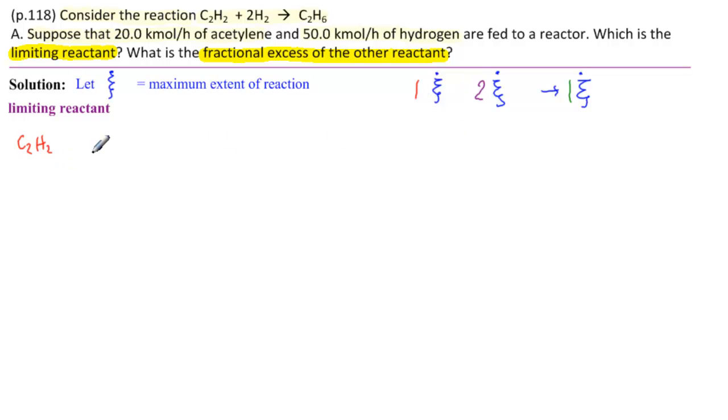Then one ξ̇ would be 20 kilomoles per hour, and then we would need two ξ̇ of hydrogen. So how much is two ξ̇? Two ξ̇ is two times 20 kilomoles per hour or 40 kilomoles per hour. Do we have that much? And the answer is we have 50 kilomoles per hour, so we have more than what we need.